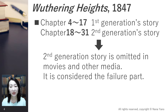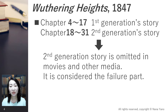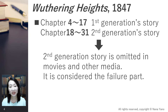Heathcliff disappears and returns three years later as a rich gentleman. Catherine suffers between her husband and Heathcliff, and dies giving birth to her daughter Catherine. Heathcliff then starts to take revenge on everyone. This first-generation story is the main part of most adaptations, and the second-generation story is sometimes omitted or considered by critics to be the failed part.